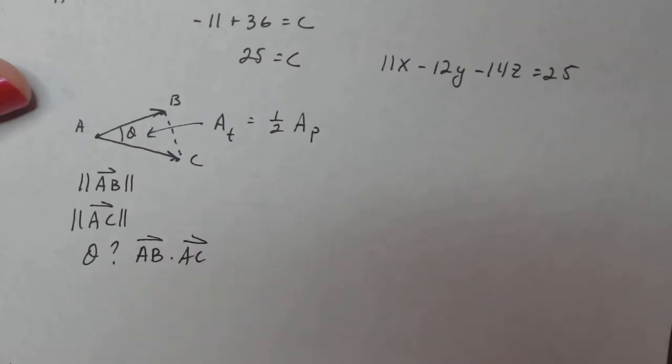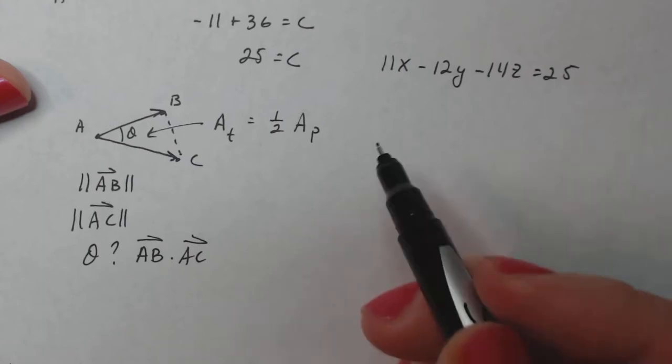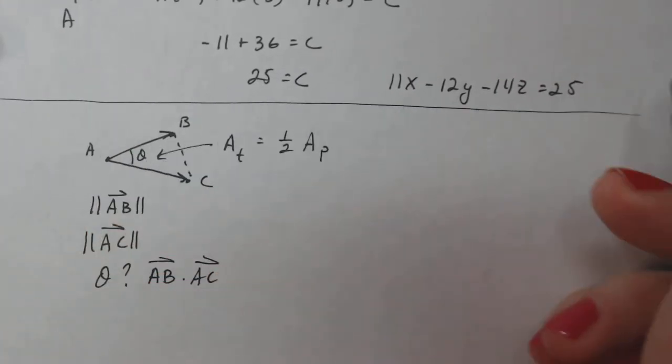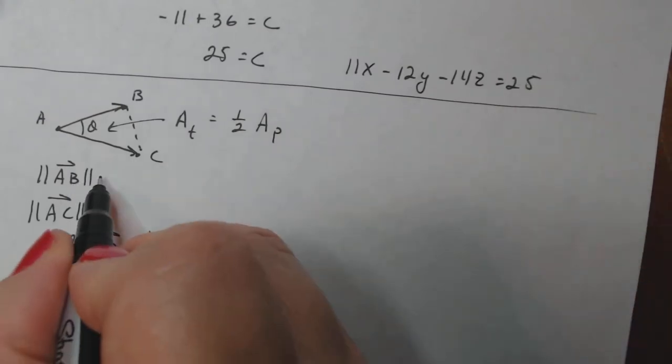So we find the angle between the two by doing the dot product. So we got a little bit of work to do before we get done with this problem. Not hard though.